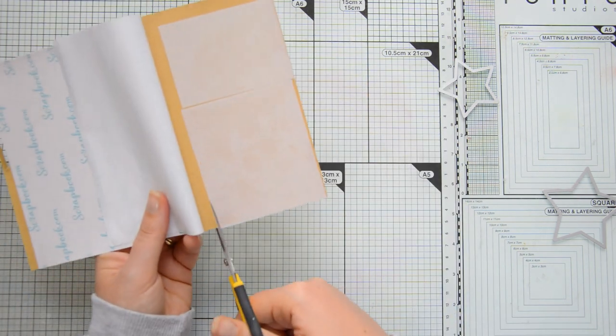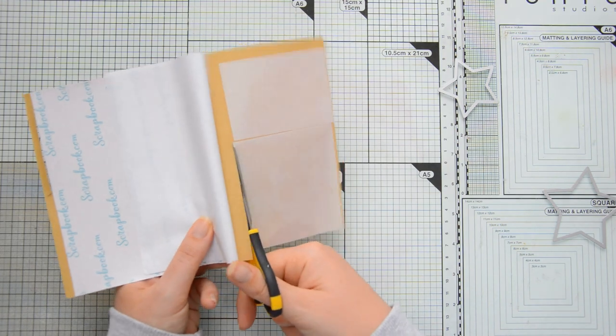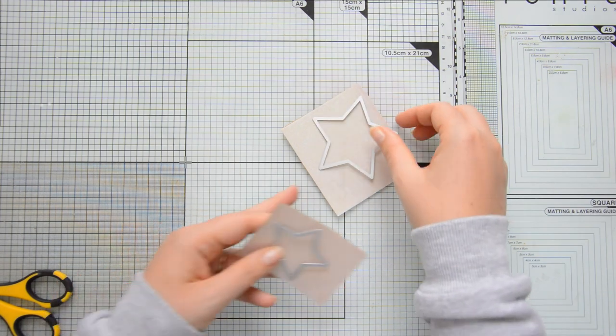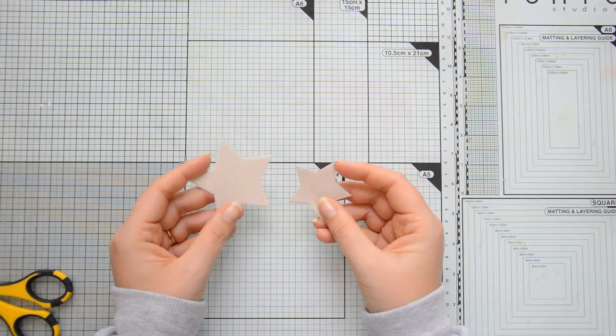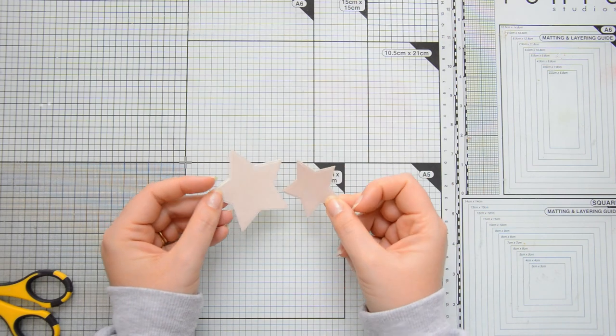So what I did is I peeled off one of the backings from the double-sided adhesive sheets that I'm using, I'm adhering the vellum on top and then I can trim off what I need and run everything through my die cutting machine to obtain these two star-shaped stickers.